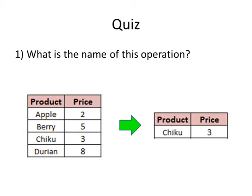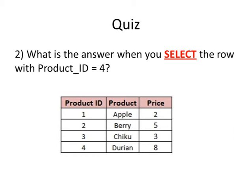Let's wrap up with a very short quiz. Given these two tables — the table on the left before, and the table on the right after the operation — can you give the name of this operation indicated by the green arrow, so that you can get a Chikku row from the table on the left? The next question is: if you perform a select operation on the table shown below with product ID equals to 4, what will be the answer?